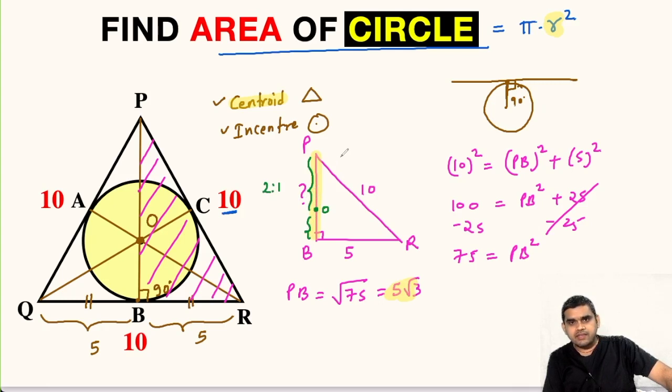So if this entire length PB is say for example X, then this length OB will be X by 3 and PO will be 2 times X by 3, and our aim was to find the radius of the circle which is nothing but distance between O and B. So this is r.